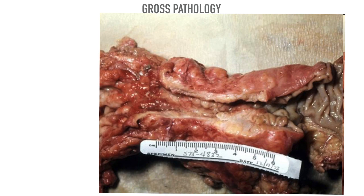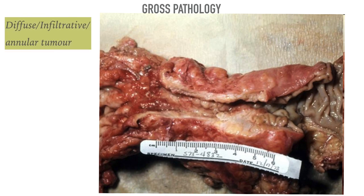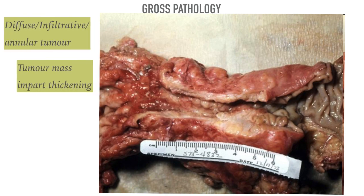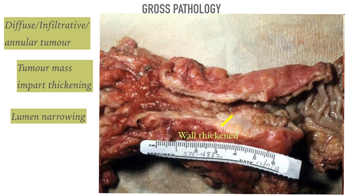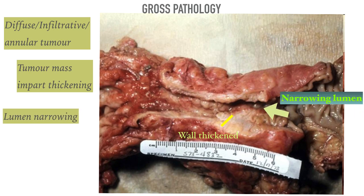Another gross pathological feature of adenocarcinoma occurs when the tumor is diffuse, infiltrative, and shows an annular growth pattern. The mass imparts thickening of the bowel wall and causes narrowing of the lumen. We call this napkin ring constriction of the bowel lumen.